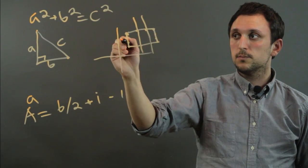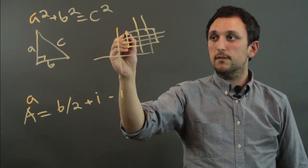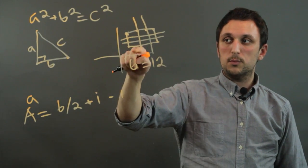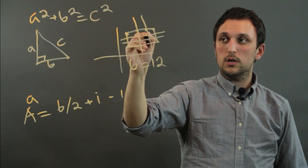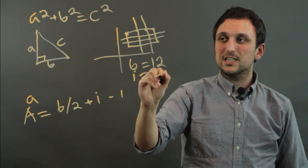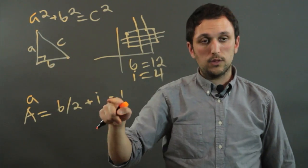If we have 12 boundary points, 12 grid points along the boundary, and then 1, 2, 3, 4 interior points, we can determine the area of this rectangle with this formula.